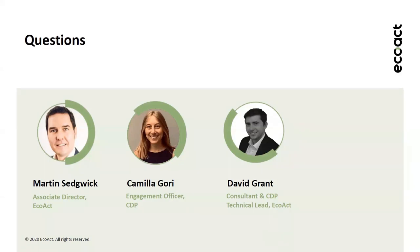Another question related to science-based targets: is it compulsory to have an SBT-approved target to be in the A-list? The short answer is no, it's not compulsory. The more expanded answer is that CDP has two different criteria for the management leadership points in that question. If you have an SBTI-verified target, there's one set of criteria which is easier to score. If you do not, what they look for is two separate targets — one with a medium time frame between five and 15 years, and another beyond 15 years — plus a number of other criteria in terms of what that target covers. So it's a bit more complicated to score the marks without an SBTI-approved target, but it is still possible.